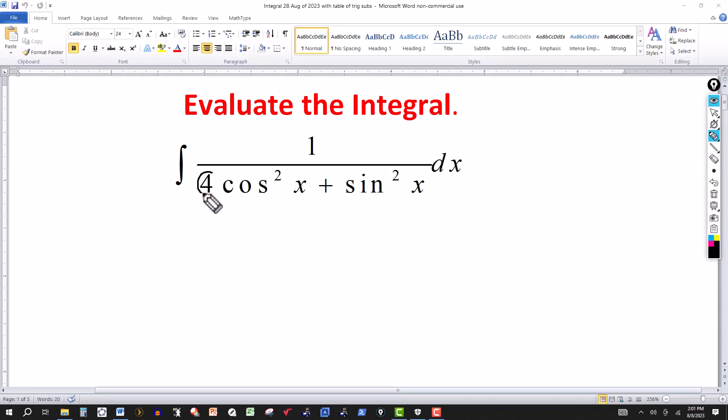If this 4 were a 1, we'd have cosine squared x plus sine squared x. That would equal 1 over 1 then. The answer would be x plus a constant. But it's not that easy here.